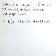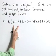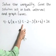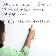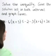Solve the inequality. Give the solution in both interval and graph forms. Here we have the inequality 4 - 6(x + 3) ≤ -2 - 3(x + 6) + 3x.